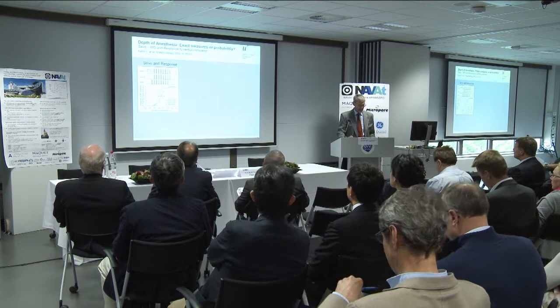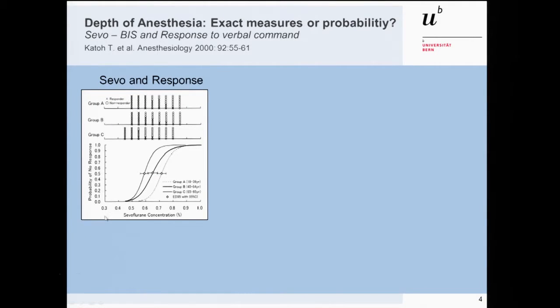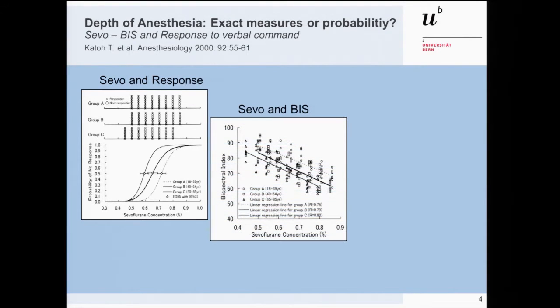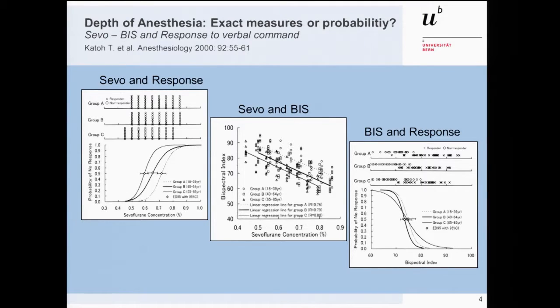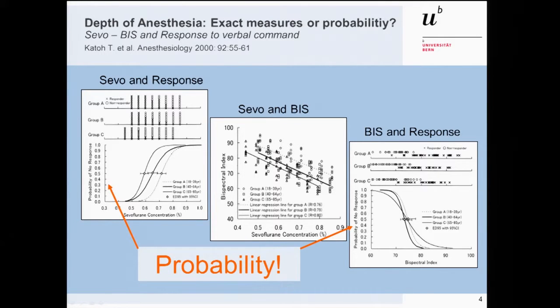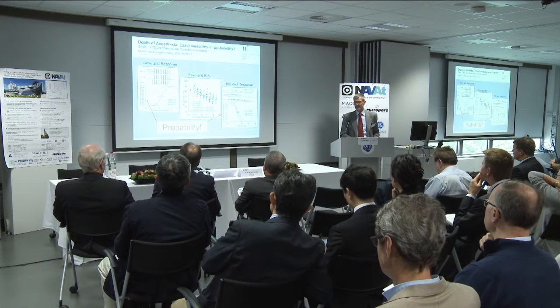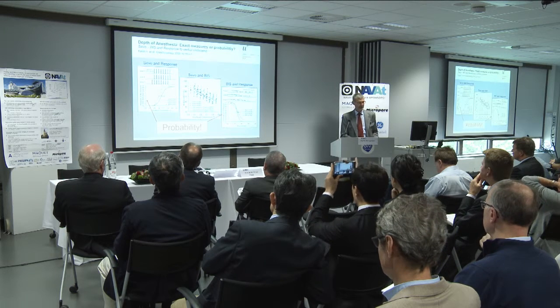Here, we are talking about probability of response to verbal command. On the Y-axis you see the probability of response, and on the X-axis you see the sevoflurane concentrations with nice sigmoid hill curves. In the same study, the bispectral index was also recorded, and what you see here is a linear relationship between the BIS and increasing sevoflurane concentration. If you plot the BIS and the probability of response, you see the reciprocal hill curves. Also in the use of anesthetic depth monitors, we are speaking about probabilities, not about complete certainty.